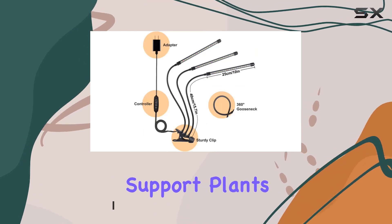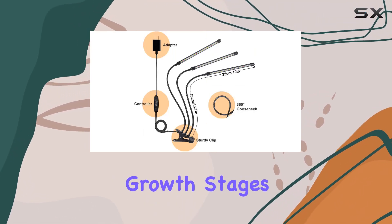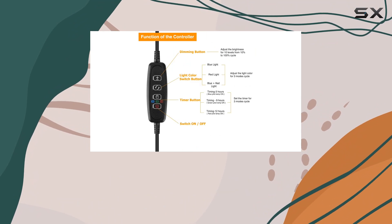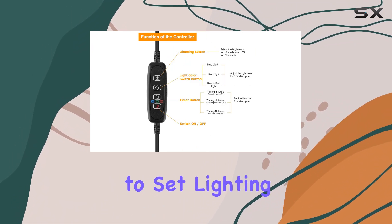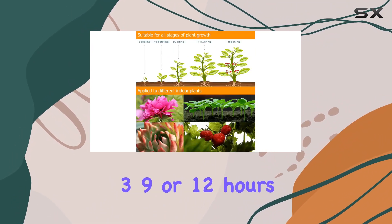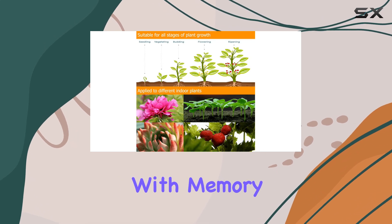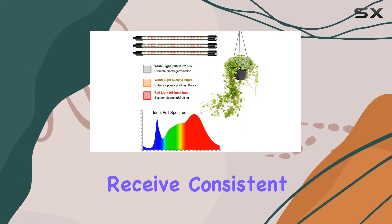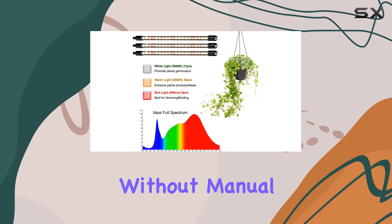Mimicking natural sunlight to support plants through all growth stages. One standout feature is its auto-cycle timer, allowing you to set lighting schedules for 3, 9, or 12 hours with memory function, ensuring your plants receive consistent light cycles without manual adjustments.